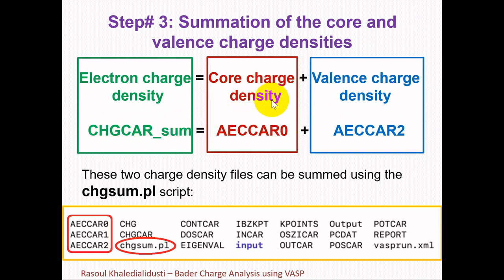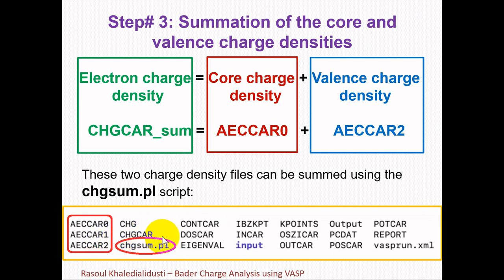The core and valence charge density files can be summed using the chgsum.pl script. The only thing we need to do is place the chgsum.pl script into the same folder as our electronic self-consistent calculation, which already includes the AECCAR0, AECCAR1, and AECCAR2 files. This script can be found from the link provided in the description section of this video, and I will show you how to get it from the web page in the next few slides.